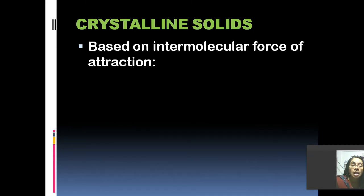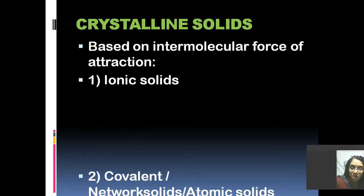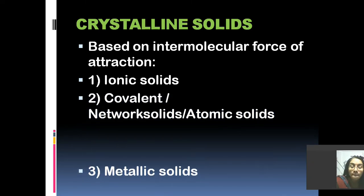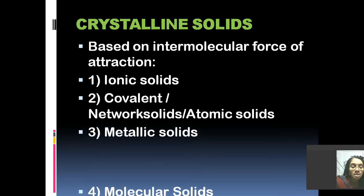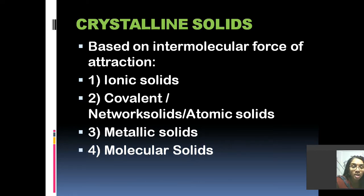Now let us move on to the classification of crystalline solids based on intermolecular force of attraction. We are going to classify crystalline solids based on the force of attraction between their particles. We have four types: ionic solids, covalent or network or atomic solids, metallic solids, and molecular solids.